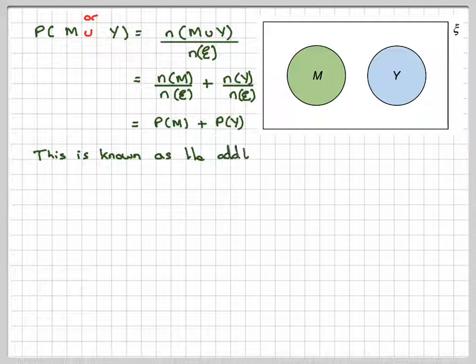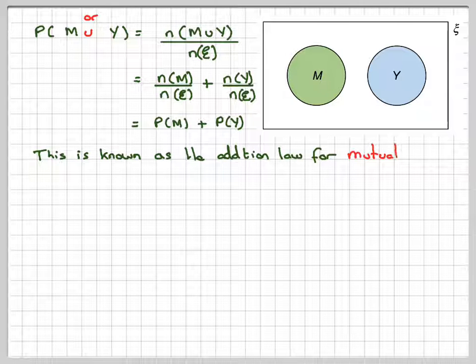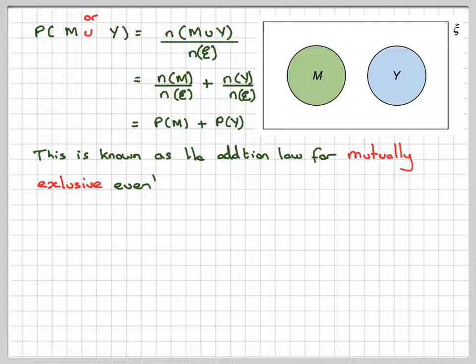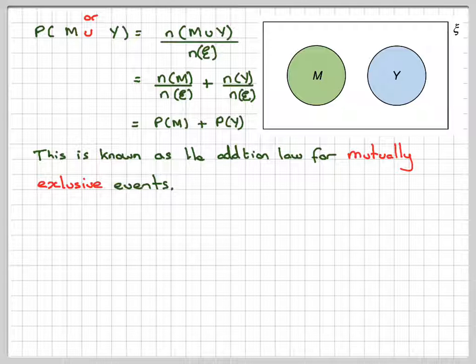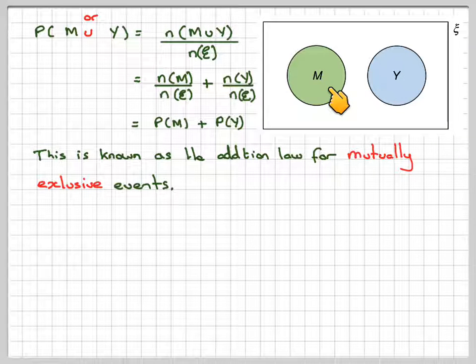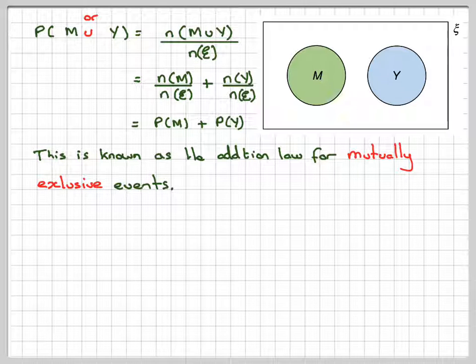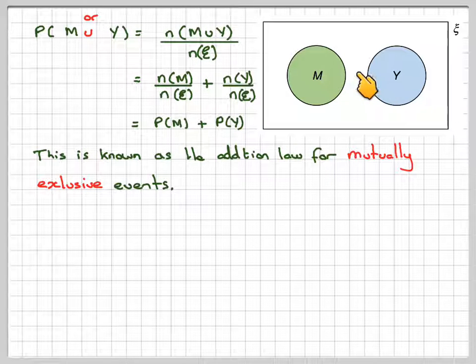This is known as the addition law for mutually exclusive events. What we mean by mutually exclusive: if they went to the museum, they cannot go yachting or any other event. If they went yachting, they can't go to any of the other events. One event excludes the other event. They cannot go on both. If they went on both, these two sets would intersect, which we'll look at in the next video.